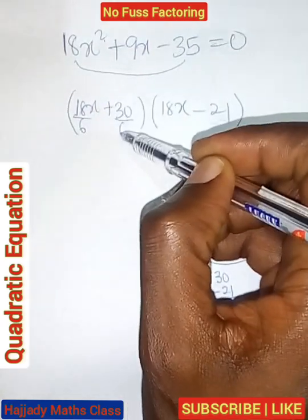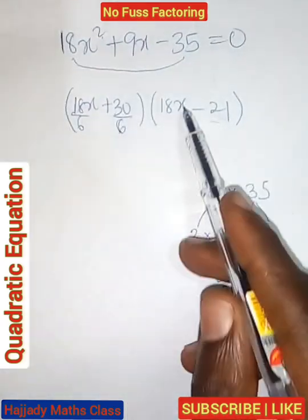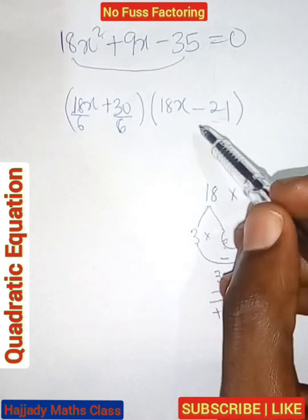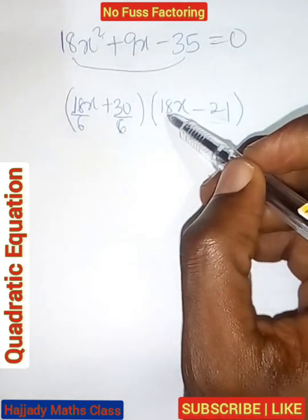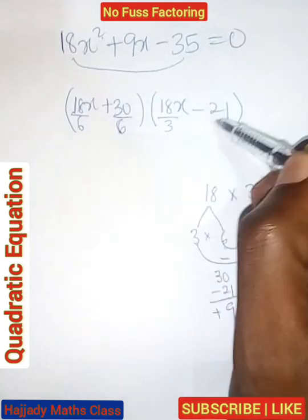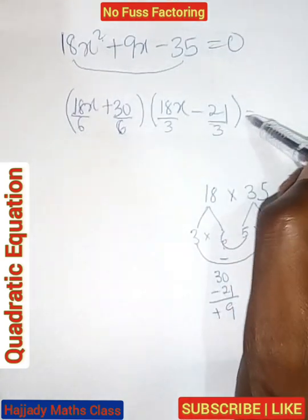So we are dividing this by 6. And the HCF of this also, the highest common factor that can divide this, that can go in this is 3.